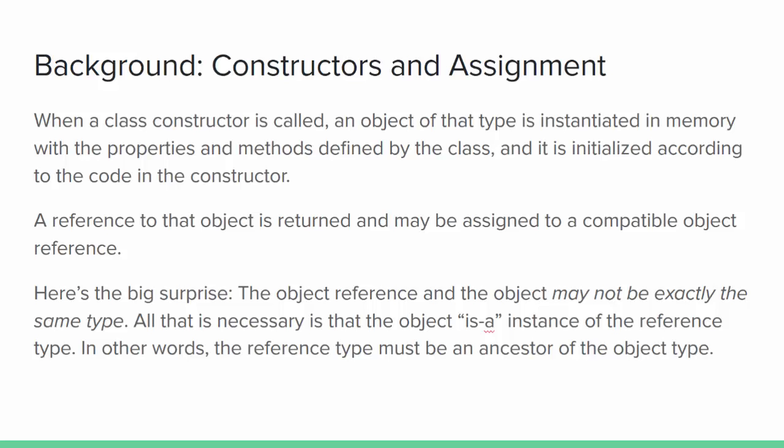Here's the big surprise: the object reference and the object may not be exactly the same type. All that is necessary is that the object type is compatible with the object reference type — it has to be true that the object is an instance of the reference type. In other words, the reference type has to be an ancestor of the object.